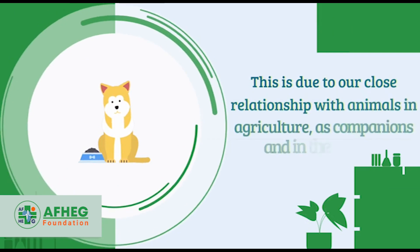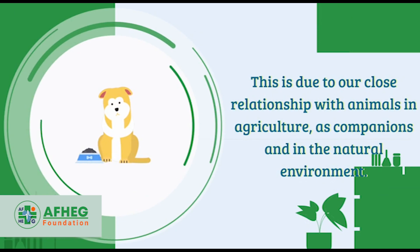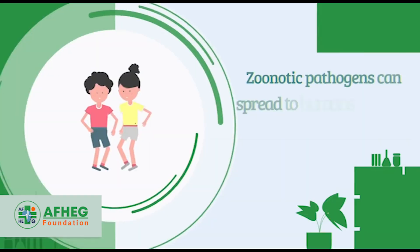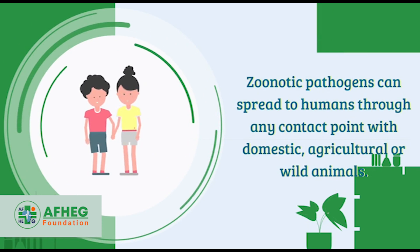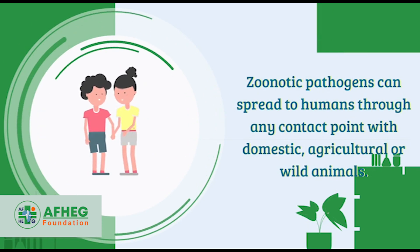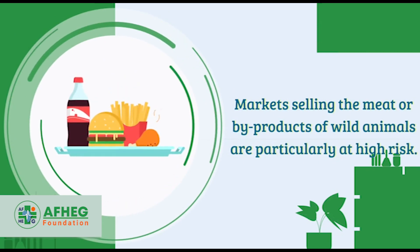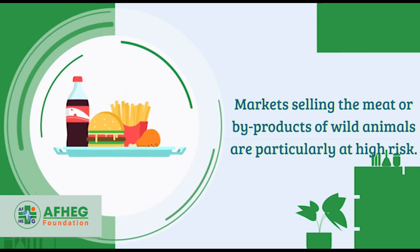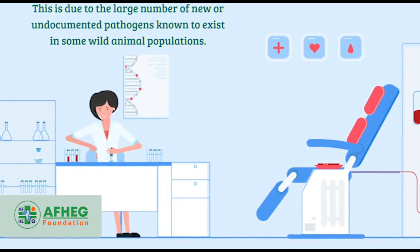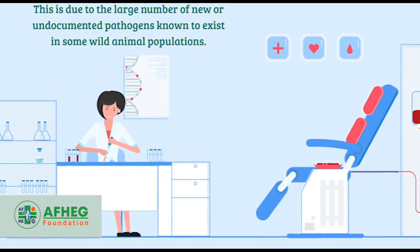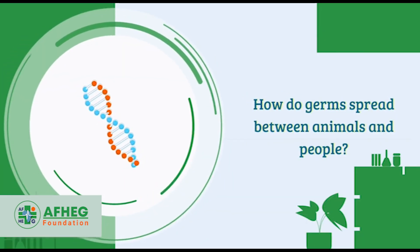Zoonoses represent a major public health problem around the world, due to our close relationship with animals in agriculture, as companions, and in the natural environment. Zoonotic pathogens can spread to humans through any contact point with domestic, agricultural, or wild animals. Markets selling the meat or byproducts of wild animals are particularly high risk, due to the large number of new or undocumented pathogens known to exist in some wild animal populations.